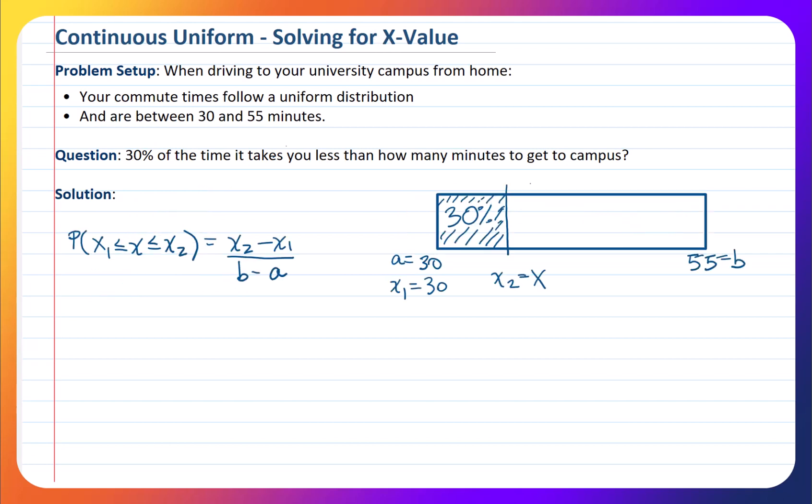I just moved things around here a little bit so we have some room to work. Let's start filling in what we know. We know that the probability or the area below X here is that 30%. And we've figured out that what we're trying to solve for is actually the X2 value, and that X1 must be 30. And we know that our boundaries: B is 55 and A is 30.